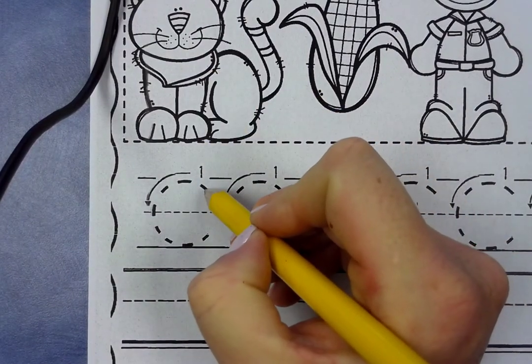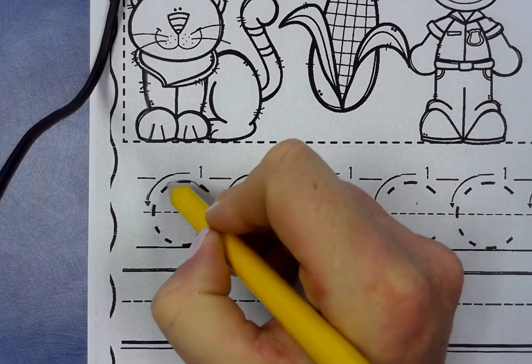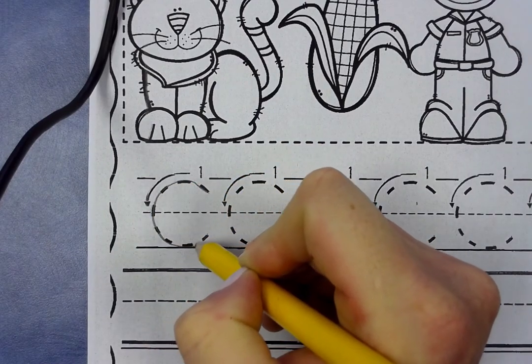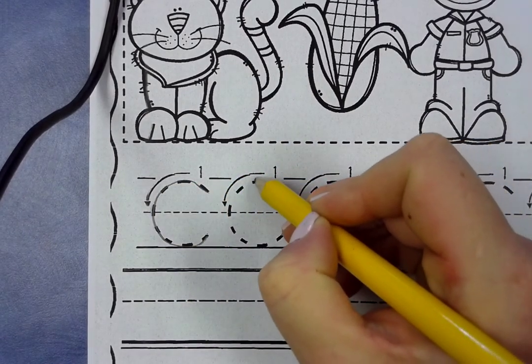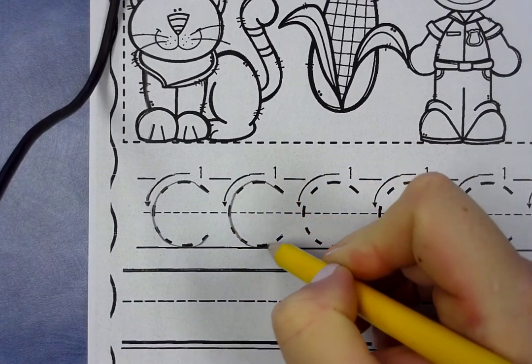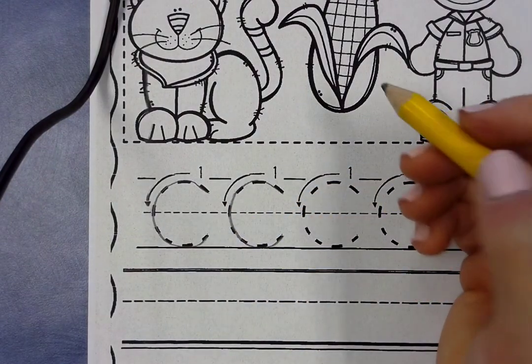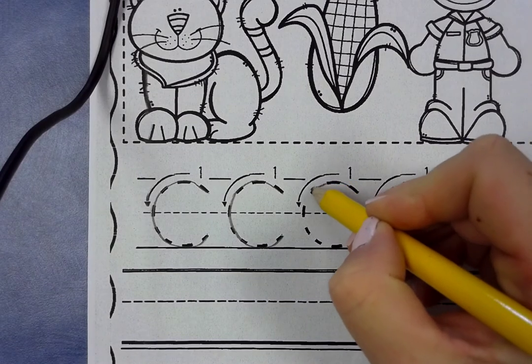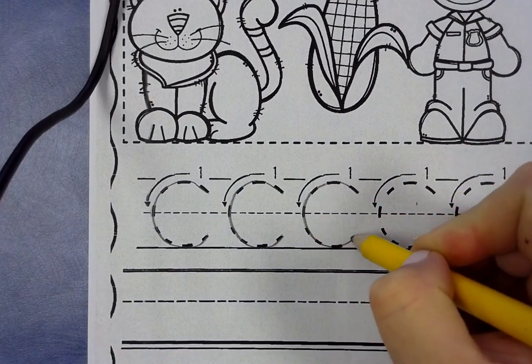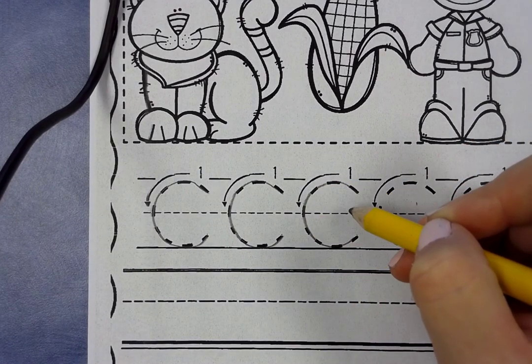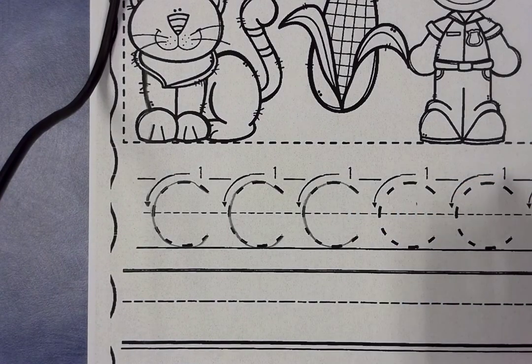Okay, so underneath the cat, we're going to start with our first C. We're going to trace our C, go up to the sky, down to the grass, and around. Up to the sky, down to the grass, and around. Up to the sky, down to the grass, and around. So we're just tracing right now. You're going to be finishing up your tracing.